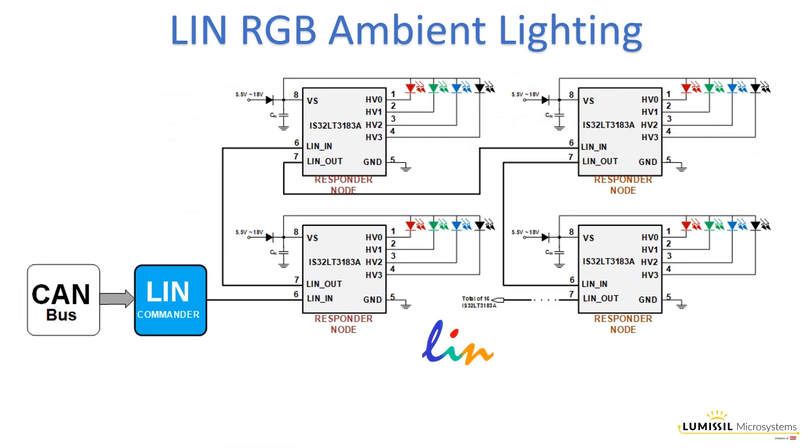LIN RGB ambient lighting consists of a LIN commander, previously known as the master, and up to 16 responder nodes, previously known as slaves. In this example, the responder nodes are for ambient lighting and use the IS32LT3183A LED driver. Each LIN responder is interconnected in a serial daisy chain fashion with LIN out connected to the next LIN in.